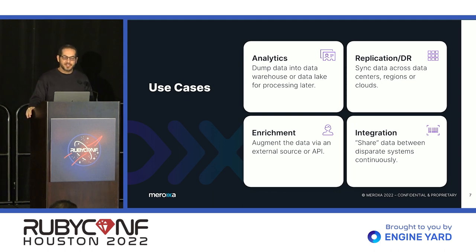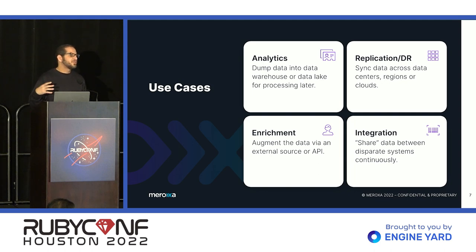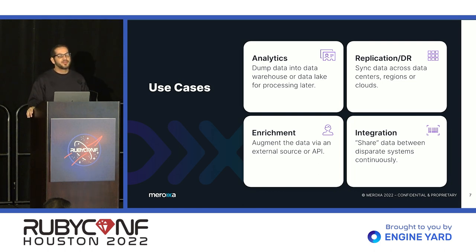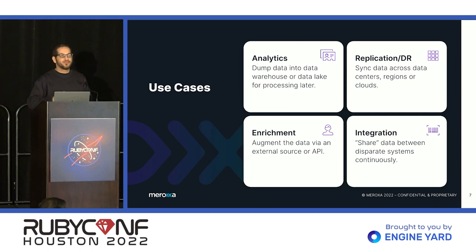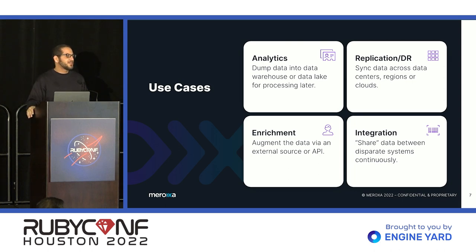Enrichment is another very common one for us. Essentially, you're taking some data — maybe a user signup — and you want to add additional information to make that data more useful. So maybe you look up their email with a third-party service that gives you more information about them, like the company, their role, or whatever it is. Then you take that enriched record and put it somewhere else — maybe back in your operational database or your data warehouse. Integration is a super vague catch-all for everything else: taking your data and putting it somewhere else where it can be used by someone else. This could be third parties, other teams — maybe you scrub the PII out of your stream of data and make it available for a partner to use.